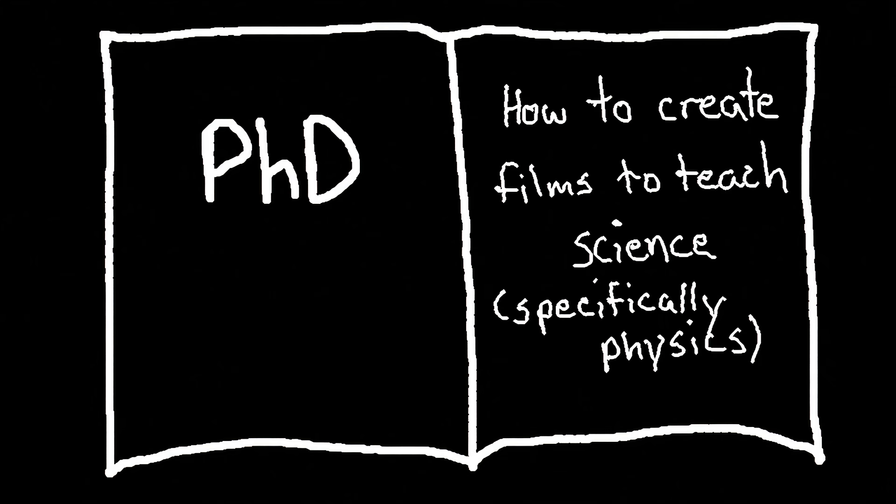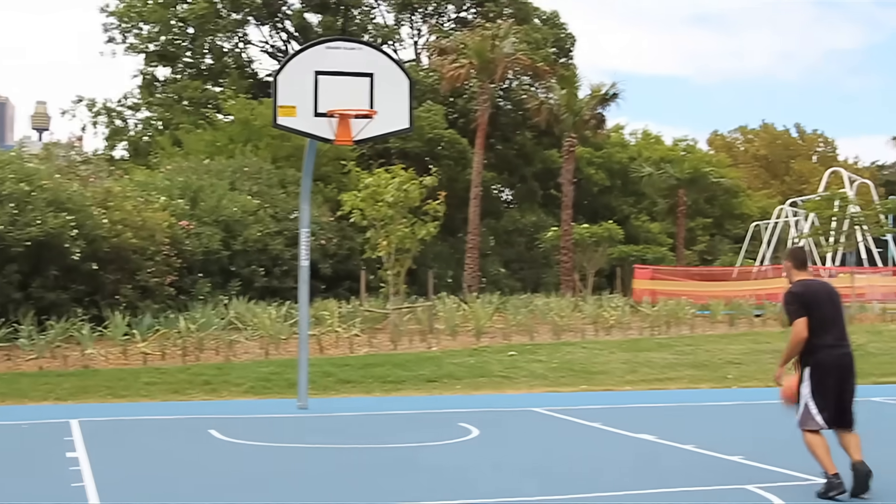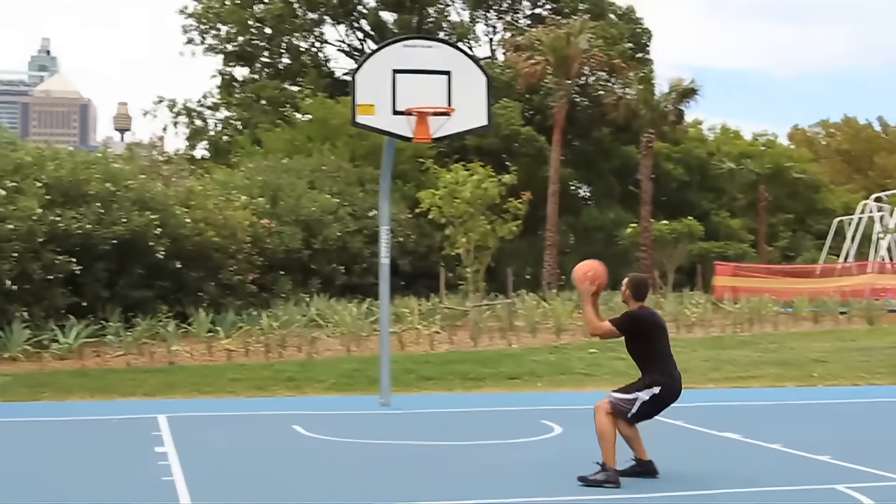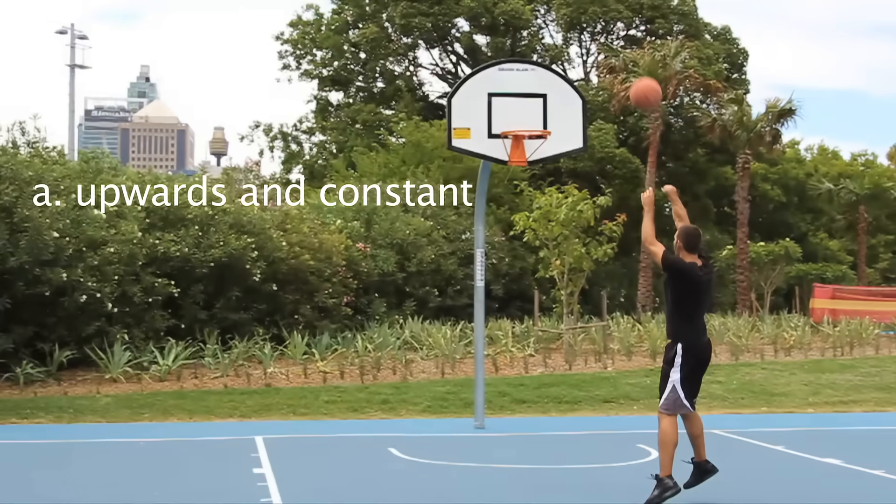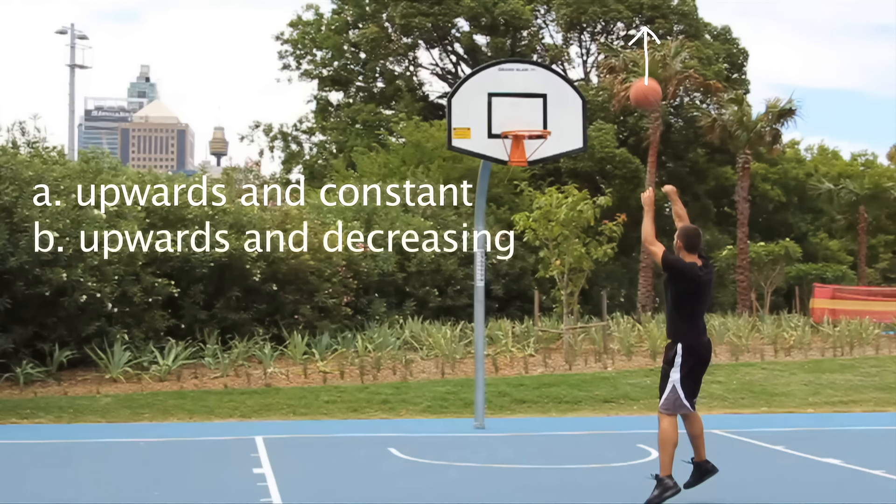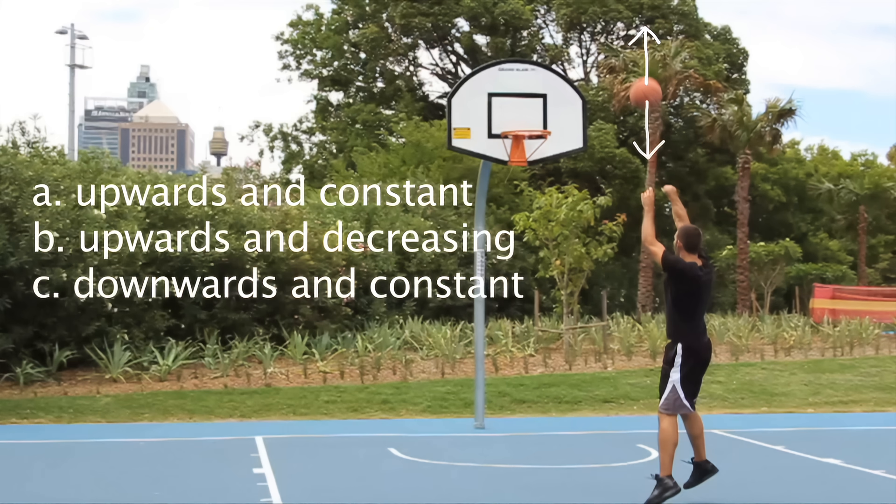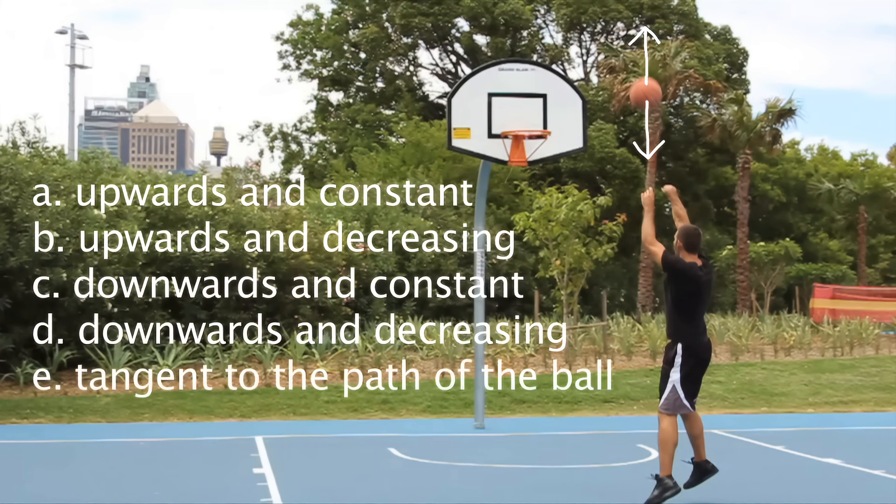In a typical study, students accessed a website where they took a multiple choice pretest. The questions were something like, consider a basketball player shooting from the free throw line. After the ball leaves his hand, the force on the ball is A, upwards and constant, B, upwards and decreasing, C, downwards and constant, D, downwards and decreasing, or E, tangent to the path of the ball. Take a minute to think about which answer you would pick, and what you think most other people would pick.